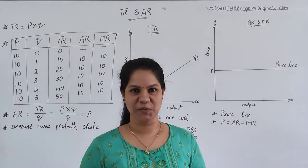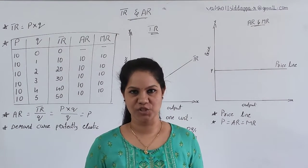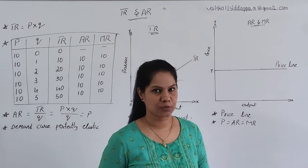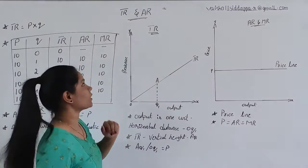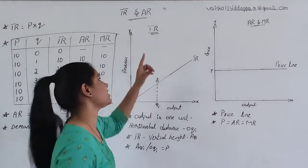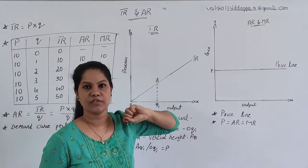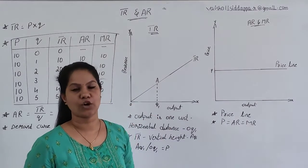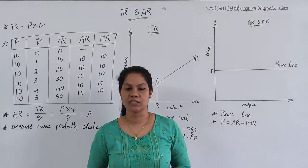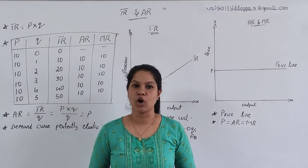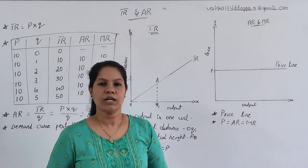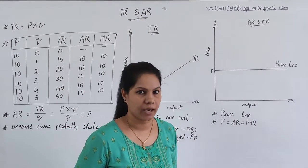Hey everyone, this is Vaishalia Sudhapai and welcome to my channel which is Complemental Economics. Today's concept is the fourth chapter and the topic is: briefly explain how exactly the TR and AR curve is going to behave in the perfectly competitive market. The fourth chapter is about the perfectly competitive market and how revenue curves are going to behave.